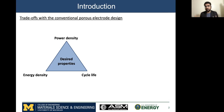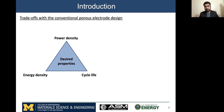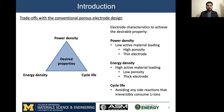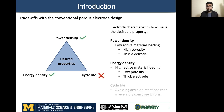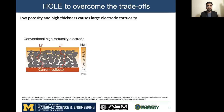And in the end, since these batteries are so expensive to manufacture, we would like them to have long life, which is determined in terms of cycle life. But when we look at the conventional porous electrode design, which forms the basis of these batteries, we see that we can only achieve two of these properties simultaneously, as shown here, while we need all three of them for our modern application.